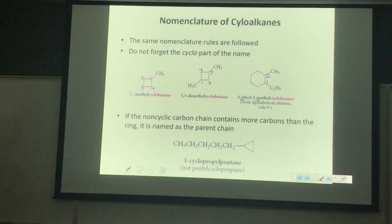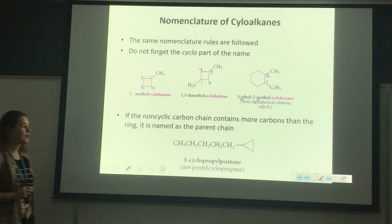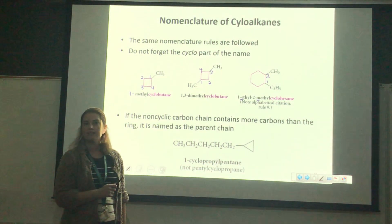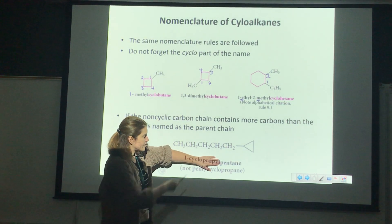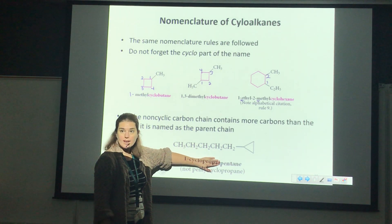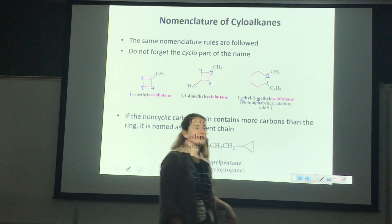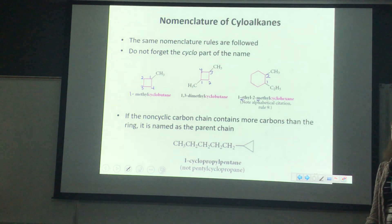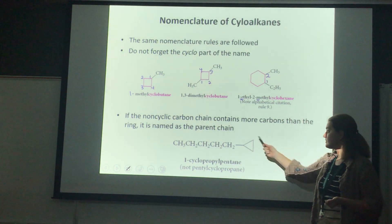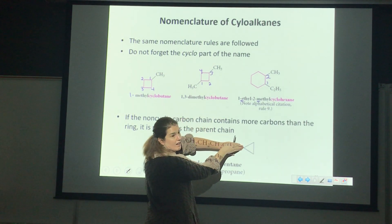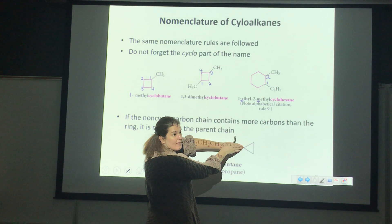If you guys put 1-methylcyclobutane, would it be wrong? No — you just don't have to include the 1 since in chemistry if there's no number, you assume it's 1. For the next one, we've got another cyclobutane. We have two methyl groups hanging off of it, and we need to figure out how to number the parent chain to give those branches the lowest number possible. Starting one of the branches on carbon 1, no matter which way you number it you're going to have methyls on 1 and 3 — so it's 1,3-dimethylcyclobutane.